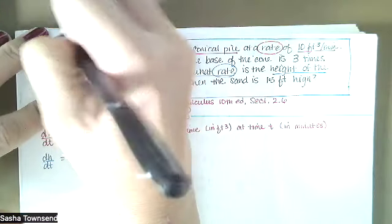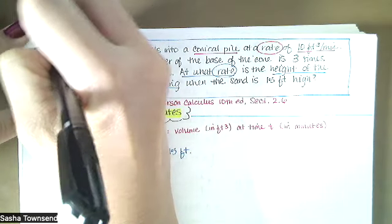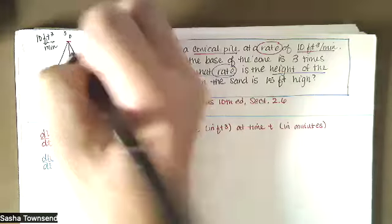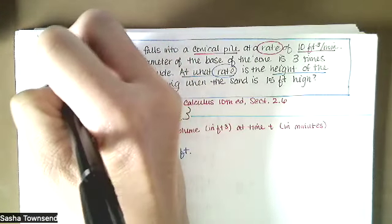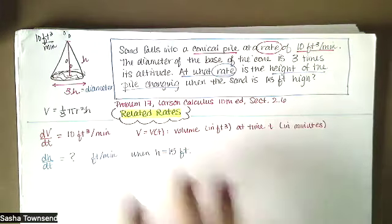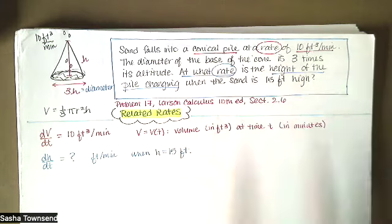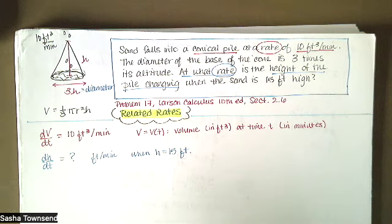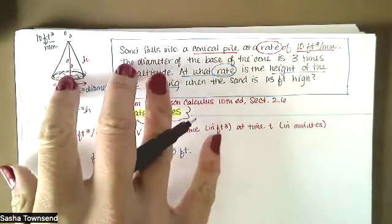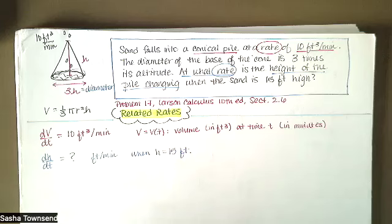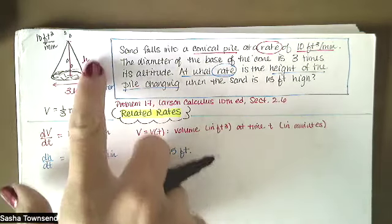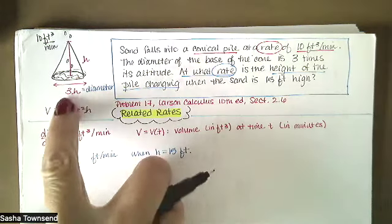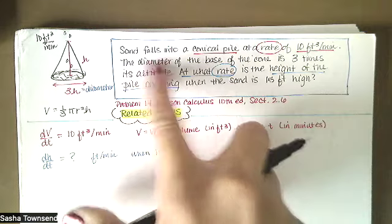So we've got sand coming into this pile at 10 cubic feet per minute, and we've got this pile of sand that results from that. We read our problem statement very carefully, translate every sentence into something symbolic involving variables. We use V for volume, lowercase t for time, H for height, draw a right circular cone, and label it with height h and diameter 3h because of that second statement in our problem.